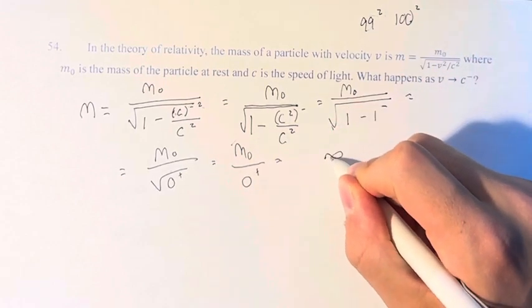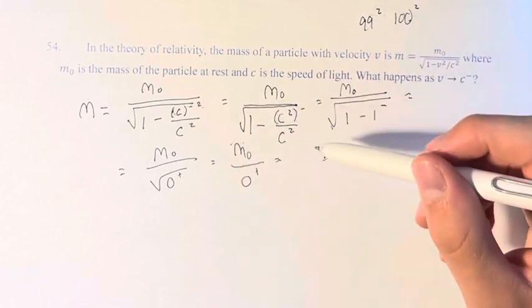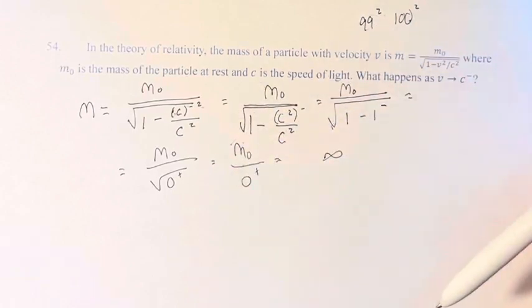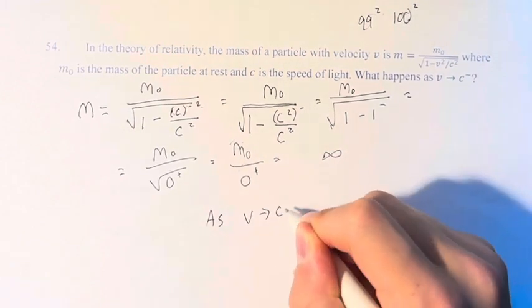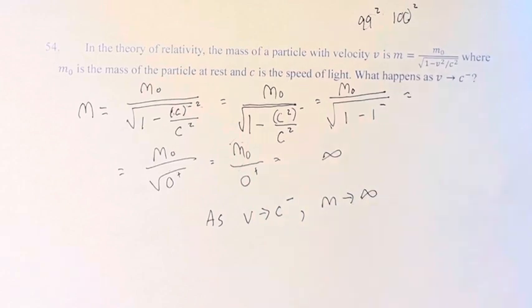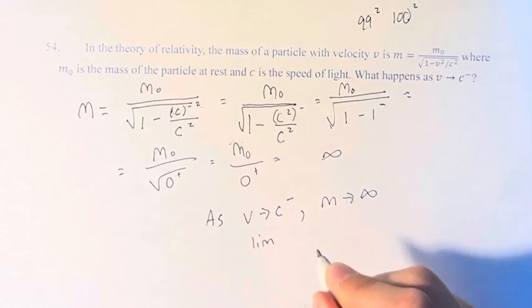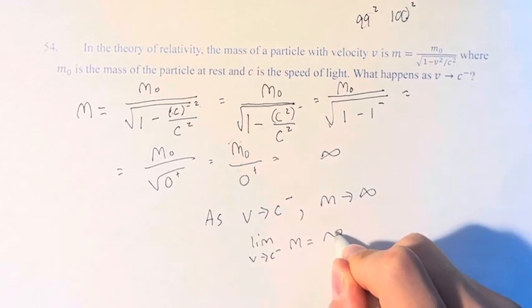It's either infinity or negative infinity. Since we have a positive number divided by a positive number, it equals positive infinity. So as v approaches c from the left, m approaches infinity. You could also write this as a limit: the limit as v approaches c from the left of m equals infinity.